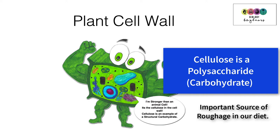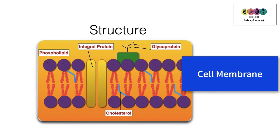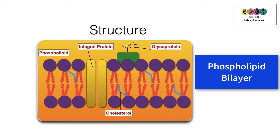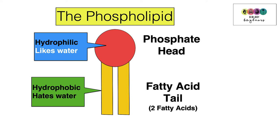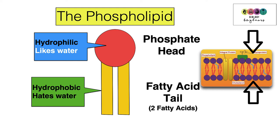The cell membrane has a very special structure known as a phospholipid bilayer — two layers of phospholipids. A phospholipid has two parts: a hydrophilic head, which likes water, and a hydrophobic tail, which hates water. Phospholipids always arrange themselves so that the heads are touching water — either outside or inside the cell — and the tails are tucked away, which is why it forms a bilayer.